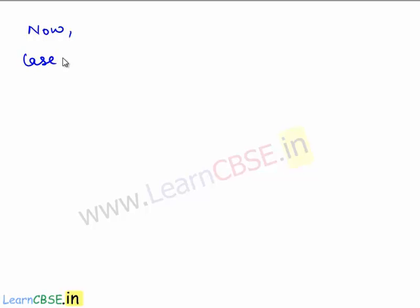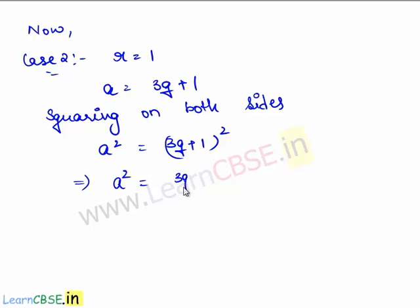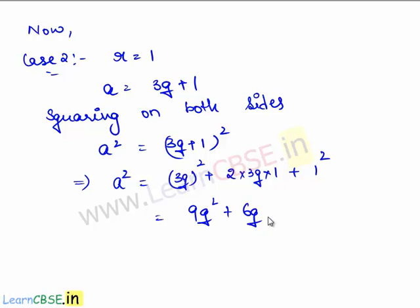Now let us take r equal to 1. Therefore a equals 3q plus 1. Squaring both sides, we have a squared equals (3q plus 1) squared. This is of the form (a plus b) squared, which expands as a squared — that is (3q) squared — plus 2ab, that is 2 times 3q times 1, plus b squared, which is 1 squared. This gives 9q squared plus 6q plus 1.